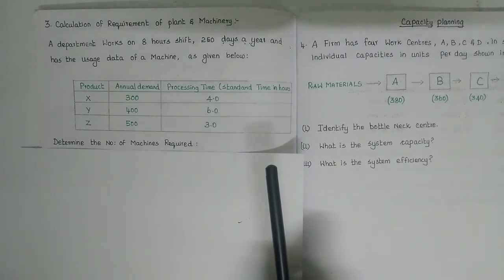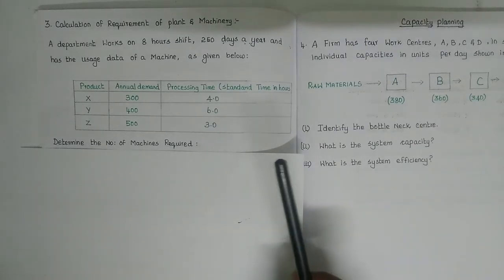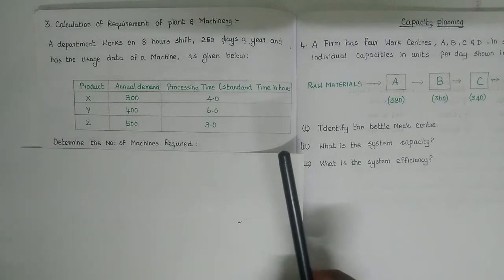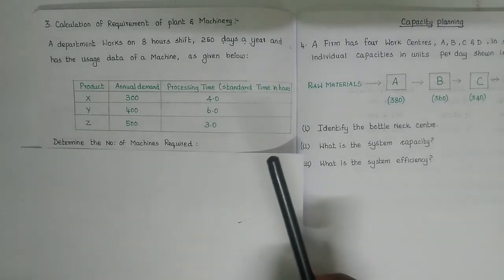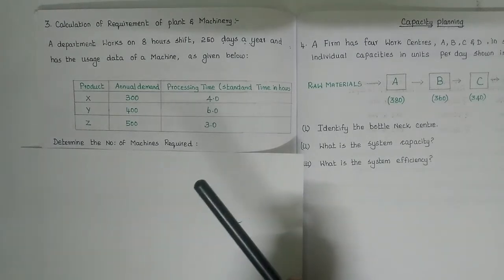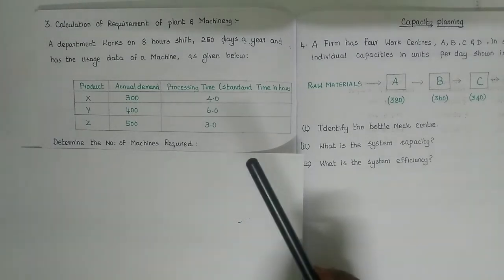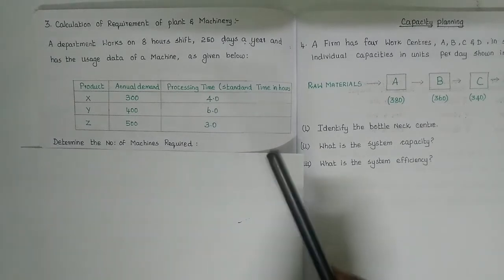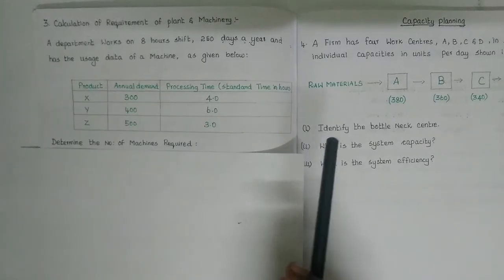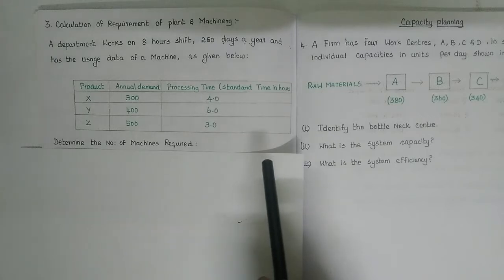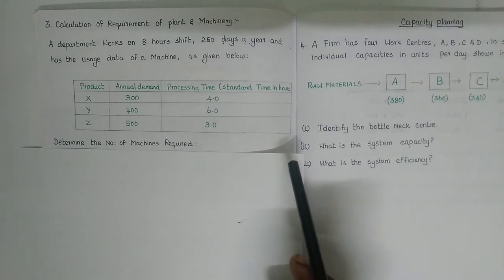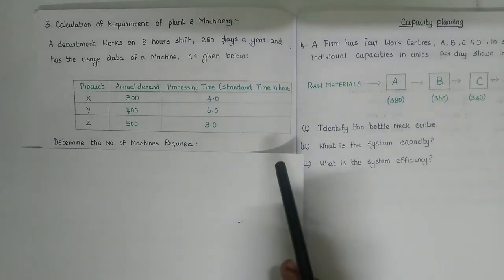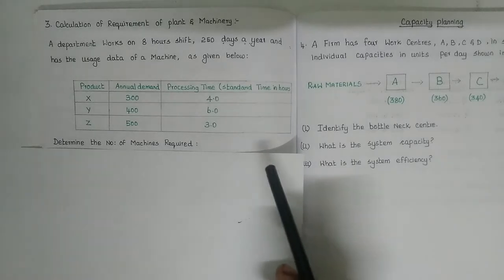Welcome to Top-Notch Lectures. In this video, the topic is capacity planning. In simple terms, this means the maximum production capacity which can be obtained within a normal working schedule. Capacity planning is essential for determining the optimum utilization of resources and also plays a very important role in decision making.